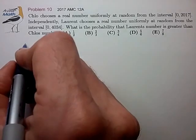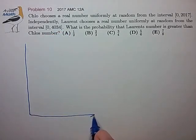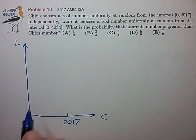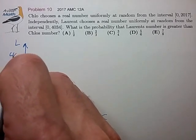Okay, let's try to draw this out. It looks like we have Clo choosing a number from 0 to 2017, and independently, we have Laurent choosing a number from 0 to 4034.